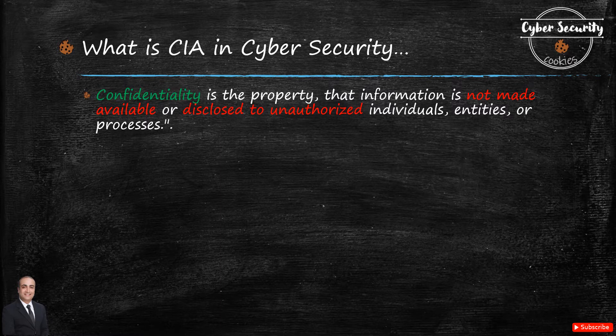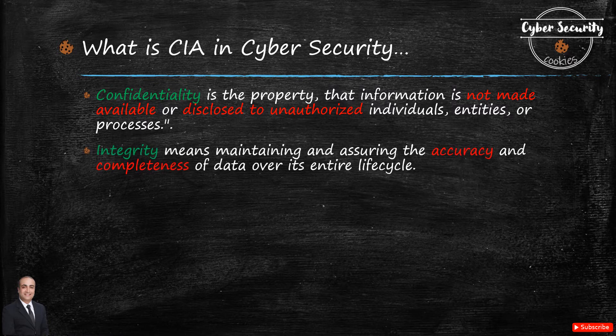The first term is confidentiality, which is more towards ensuring that the information provided to us is safe from any kind of accidental or intentional disclosure. That means if I send a message to Bob, he should be the only one who knows that the message is for him and no one else. So that is what confidentiality is — there should be no unauthorized disclosure.